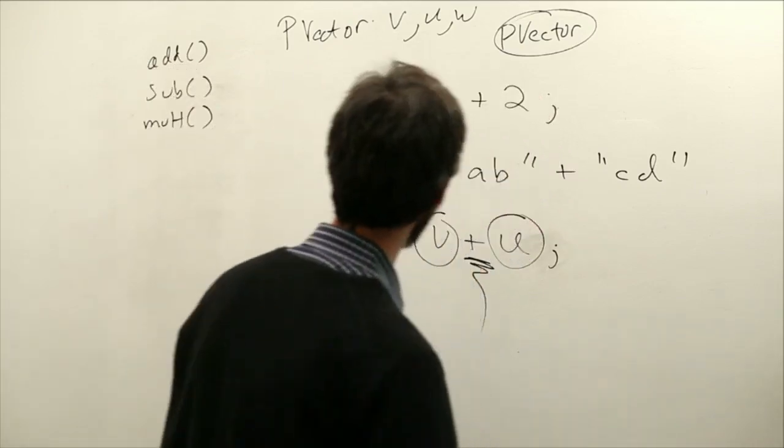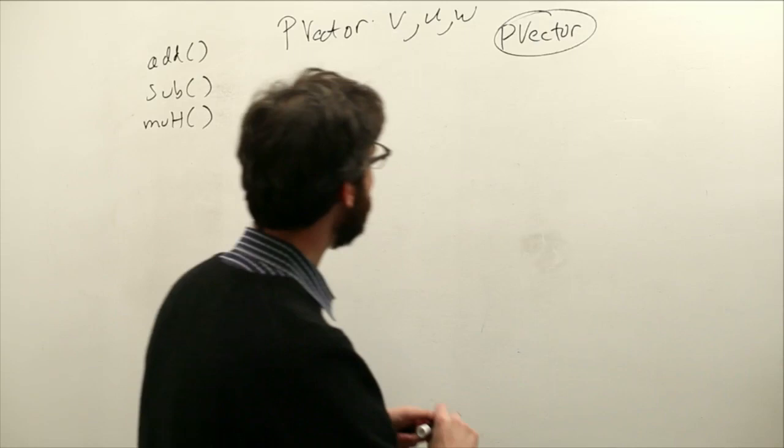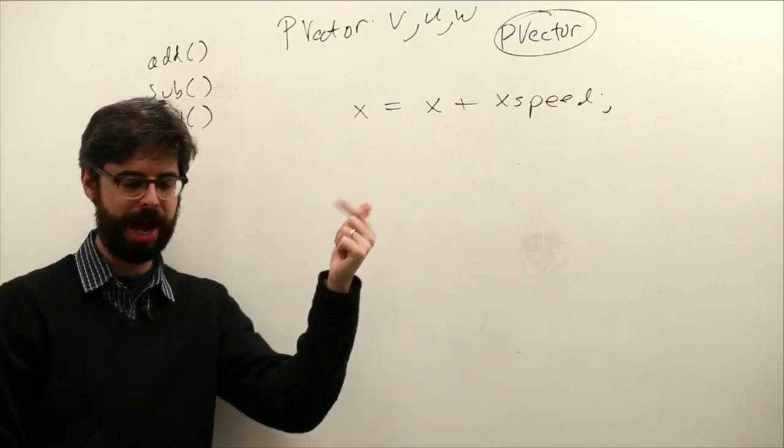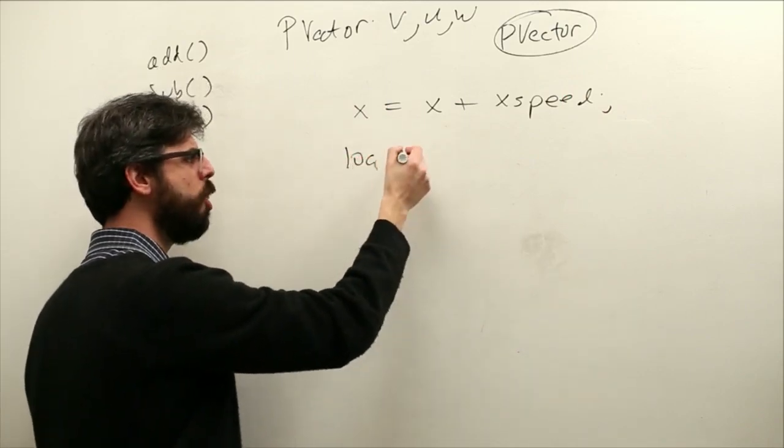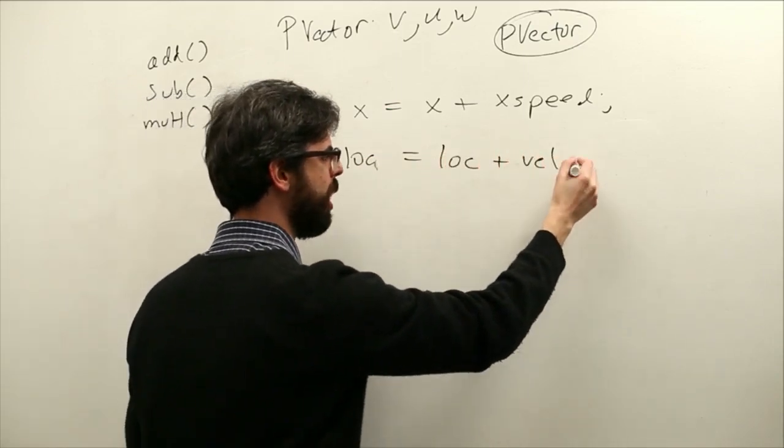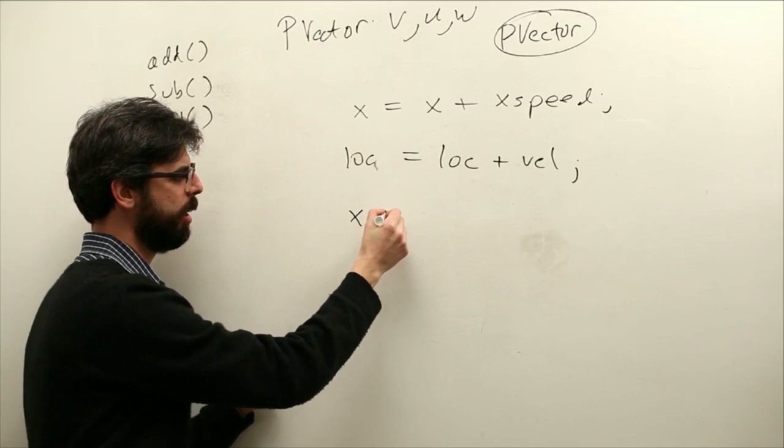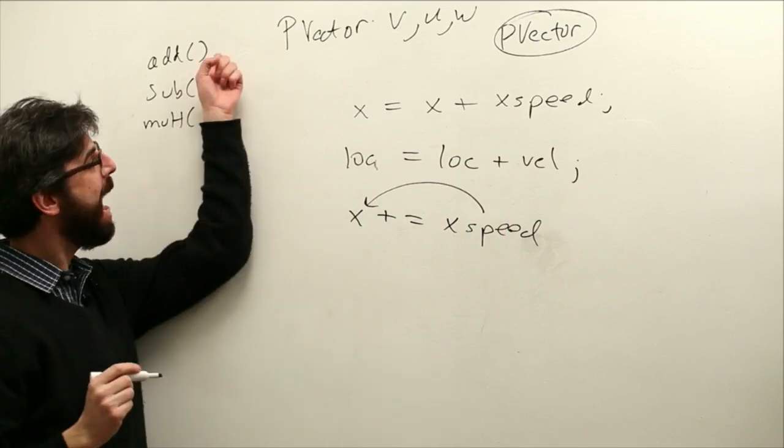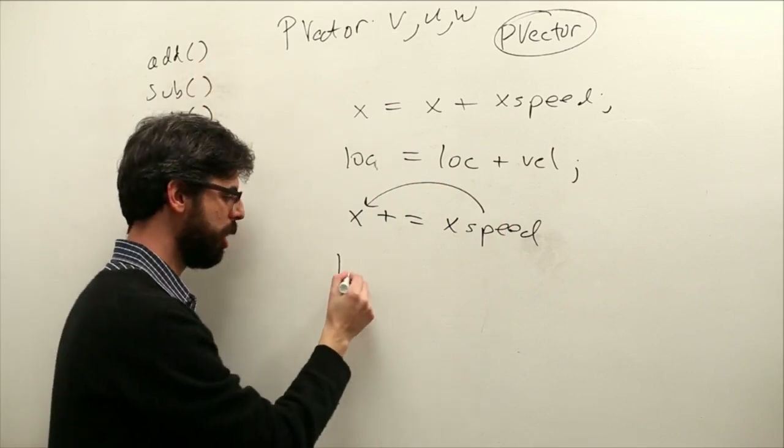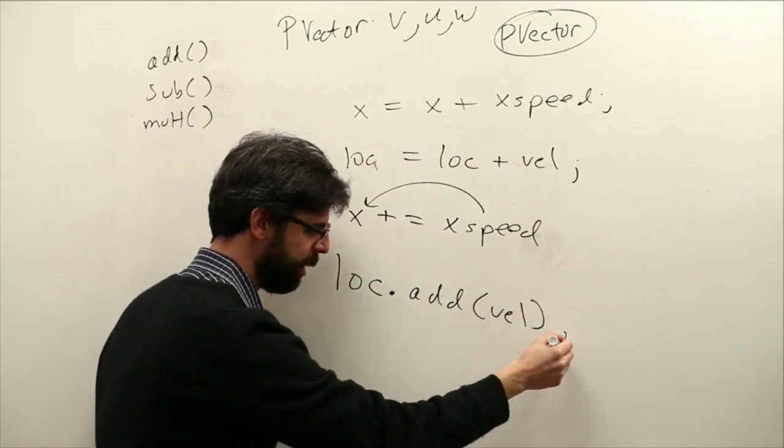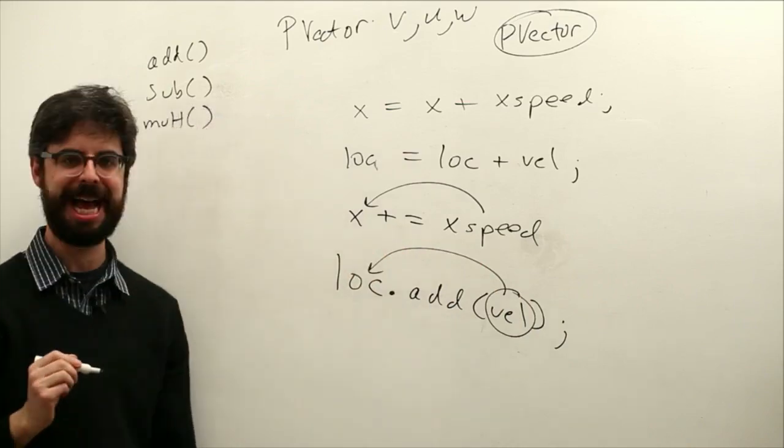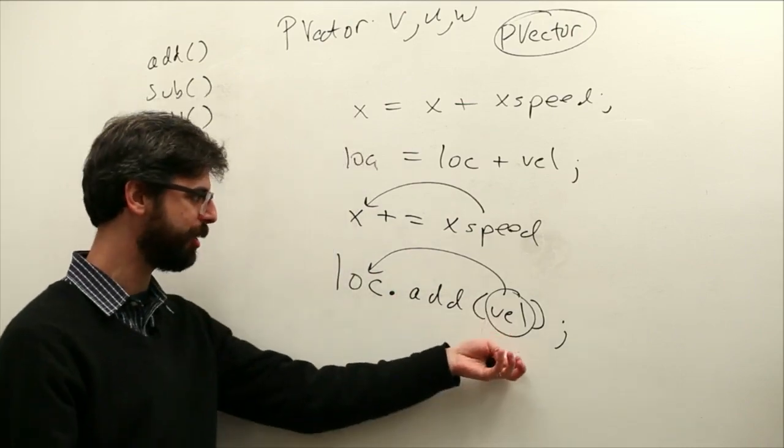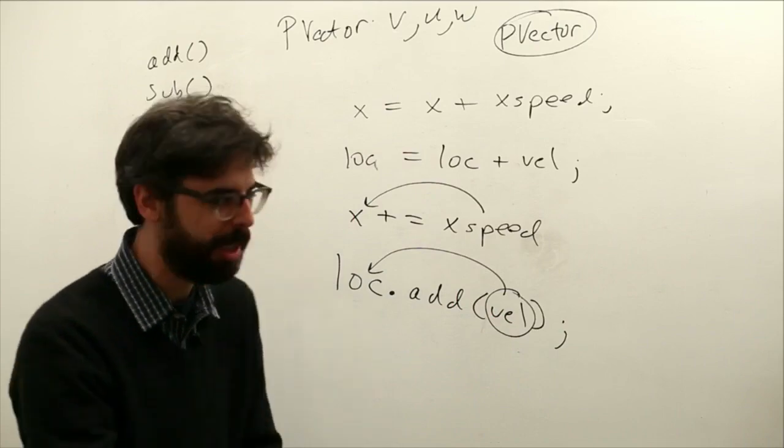So the next video I want to go through some of these functions and what the math behind them means. For now, let's just take a little step into adding vectors. So what was the situation we had? We had x equals x plus xSpeed before we had vectors and we had the same for y. Now we think we have location equals location plus velocity. Well, by the way, there's a shorthand x plus equals xSpeed, which means add xSpeed to x. And in fact, the add method in the PVector class, we can say this: loc.add(velocity).